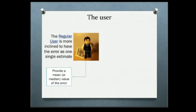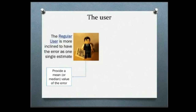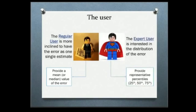Who is going to use this? A regular user might want just a single estimate of the error — plus or minus two millimeters per day. Since the output of my model is a probability distribution, I can give them the median or the mean of that distribution. But we might have superheroes out there who are interested in the actual distribution of the error — in that case we can provide percentiles: the 25th, 50th, and 75th percentiles.